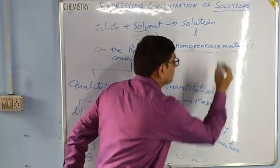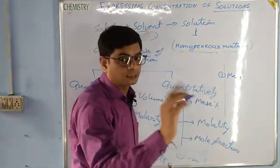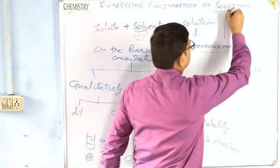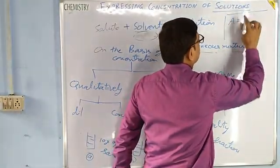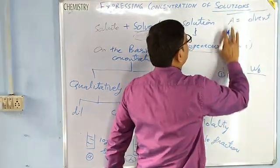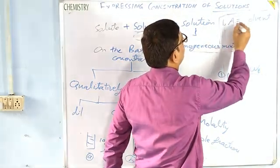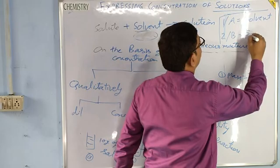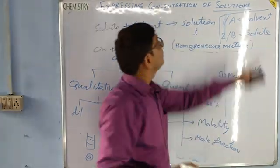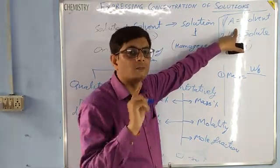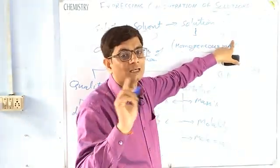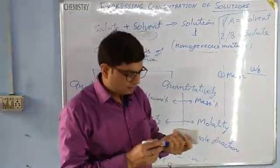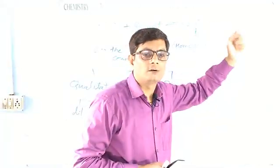Mass percentage: the formula of mass percentage — that is the mass of solute. Throughout this chapter, we will use A for solvent and B for solute. Sometimes we use 1 for solvent and 2 for solute. In NCERT especially, they have used A for solvent and B for solute. The formula is W_B divided by W_A plus W_B, into 100. Here W stands for weight or mass of solute divided by mass of solute plus mass of solvent, into 100.